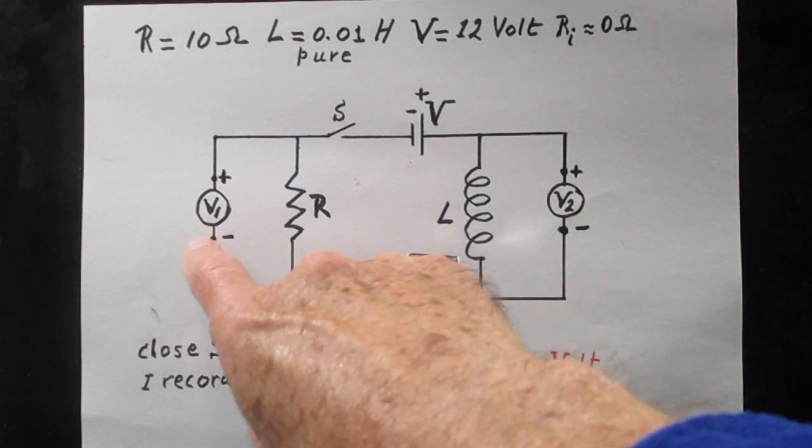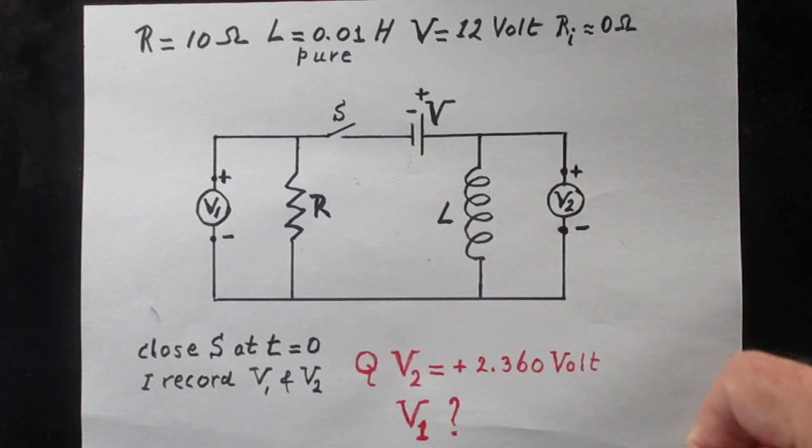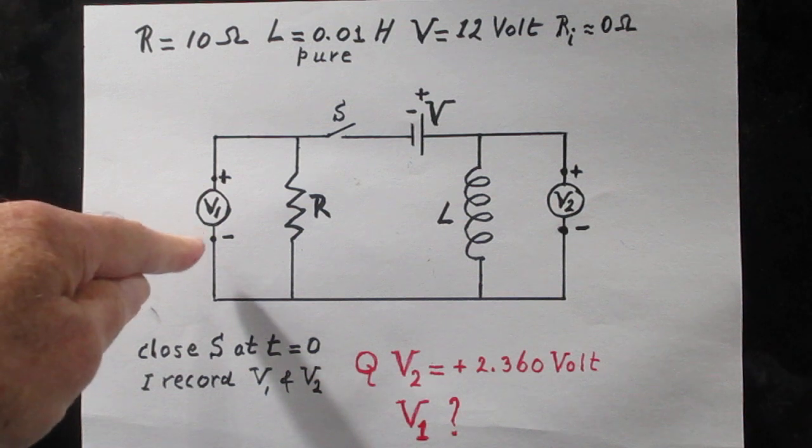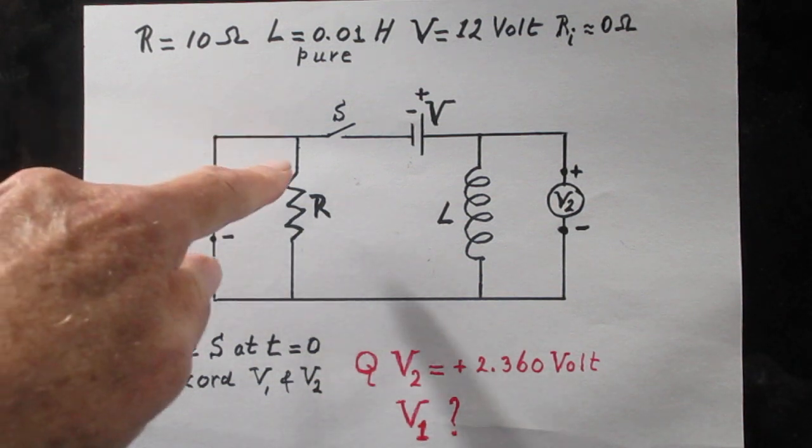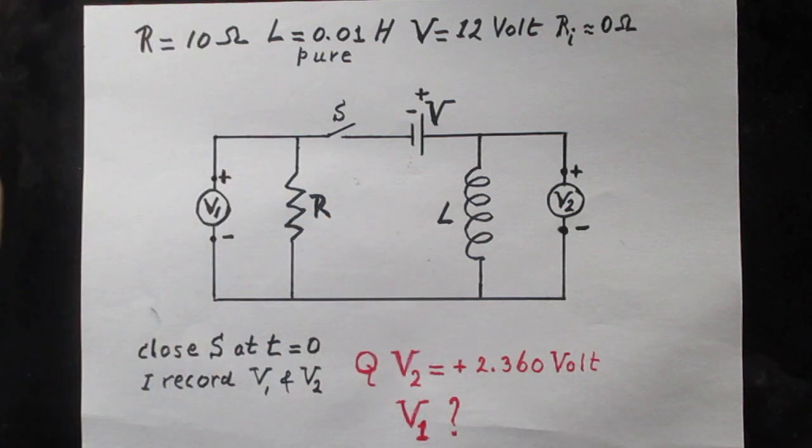On this side I have also a voltmeter, V1. This is the plus side and this is the minus side, and here is a resistor R which is 10 ohms.